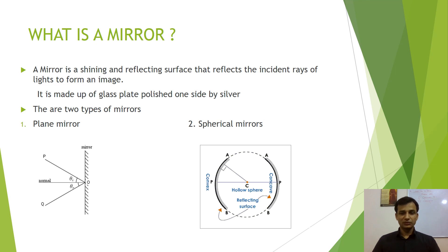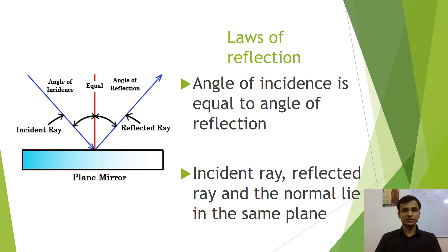A plane mirror is a plane glass sheet polished from one side, and spherical mirrors are part of spheres. Now, how does the reflection of light from mirrors take place? Reflection of light from mirrors takes place according to the law of reflection. As you can see in the figure, there is an incident ray, a reflected ray, and a normal which is drawn on a plane mirror.